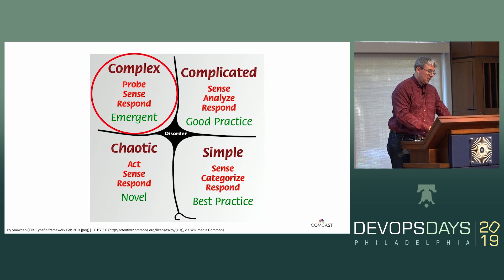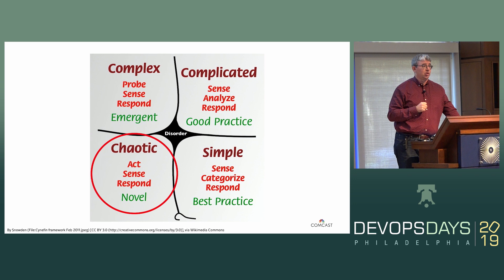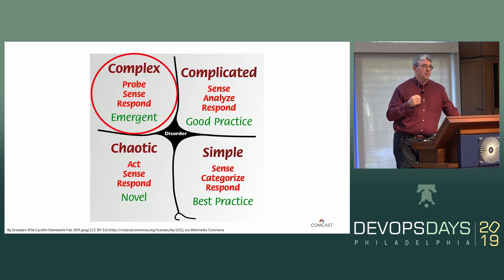The next level is chaotic systems, where you can't even understand cause and effect. These are very difficult systems to deal with. This would be something like throwing the tennis ball out there, but with the lights turned off while it's going on — we can see where it ended up, but we're not really sure how it got there or why. In this talk, what I'm hopefully going to convince you of is that the systems we deal with on a regular basis in the technology industry are, in fact, complex systems.